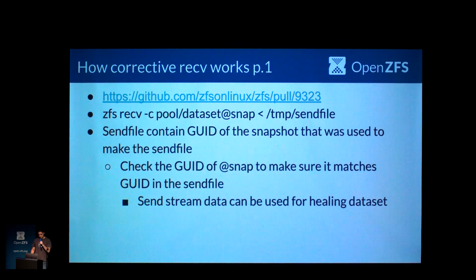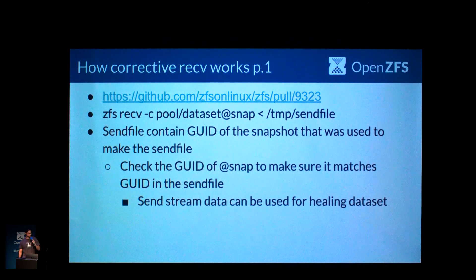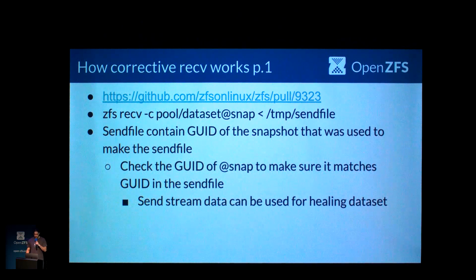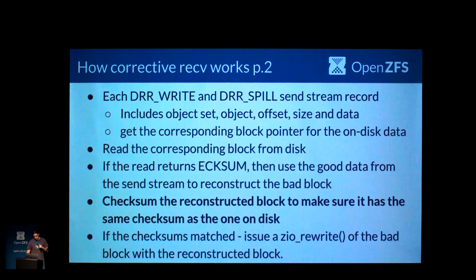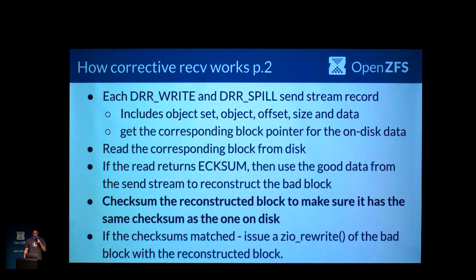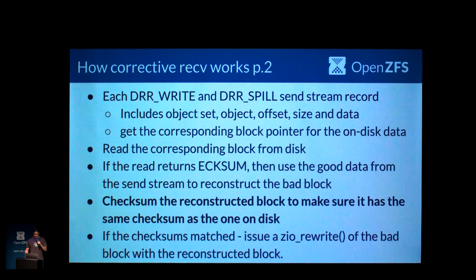You give it receive minus c, then the snapshot, and the send file that you're healing from. The first thing we do is check for the GUID inside of the snapshot and make sure it matches what's in the send stream — that's kind of an arbitrary restriction. The reason to do that is so you know the data in the send file can be used to heal this dataset. If the GUIDs match, we can move on to looking at the records inside of the send file: each write and spill record, picking out the object set, object ID, offset, and data, then figure out what the corresponding block is on disk.